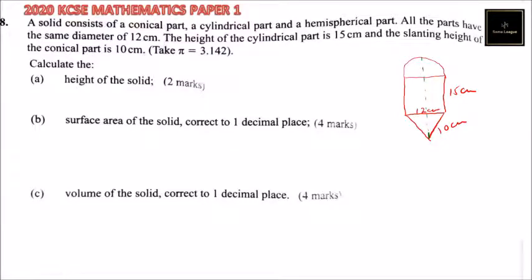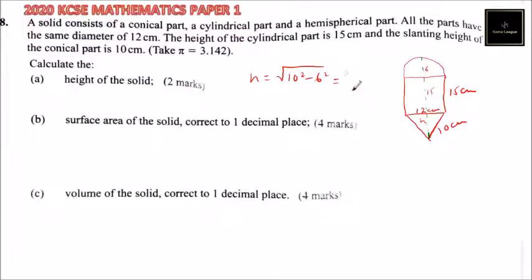We need to find the height of the conical part. Because the diameter is 12, the radius is 6. We have the slanting side of 10, so we use the Pythagorean theorem: height equals the square root of 10 squared minus 6 squared. That gives us the square root of 100 minus 36, which equals the square root of 64, which equals 8. So the height of the cone is 8 cm.